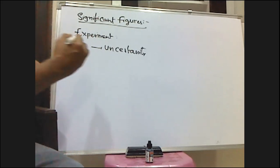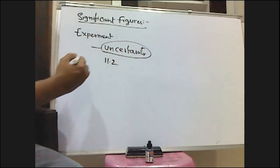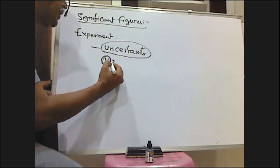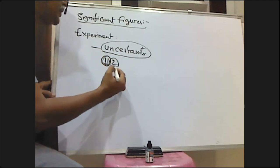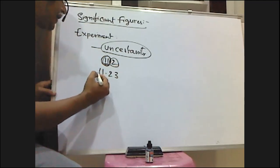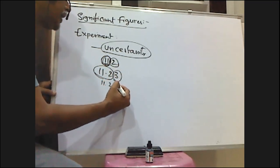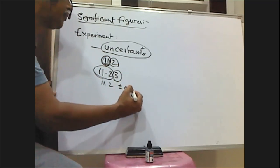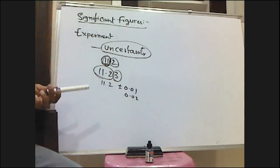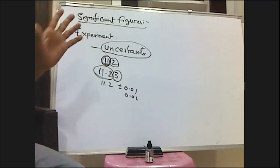Uncertainty means, for example, if length is mentioned as 11.2, the exact value is 11.2, but this 0.2 is unsettled. Suppose if I say length is 11.23, then the certain value is 11.2, and this 0.03 is unsettled, which may be around plus or minus 0.01 or plus or minus 0.02. So it may be 11.24 or it may be 11.21. Generally, all experimental results are associated with some kind of uncertainty.